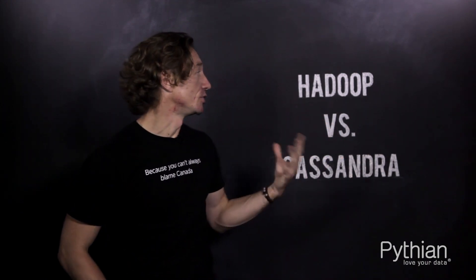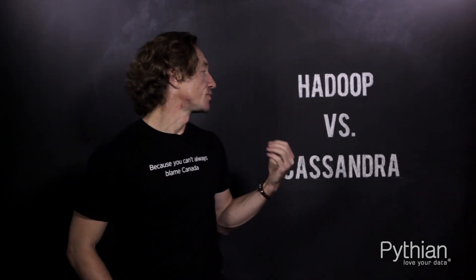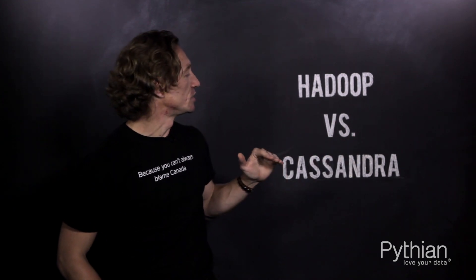Cassandra requires certain structure — you have to put a lot of thinking into structuring your Cassandra data model before implementing it at scale. This is opposed to Hadoop, which can accept data in pretty much any format: structured, unstructured, semi-structured — images, JSON, XML, and so on. Hadoop is basically a file store.